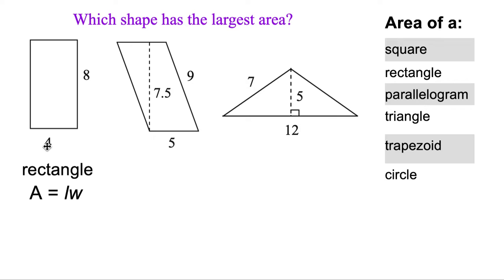And it doesn't matter the order we do it, because 8 times 4, same thing as 4 times 8. But either way, we're going to end up getting 32. So that's the area for that rectangle.